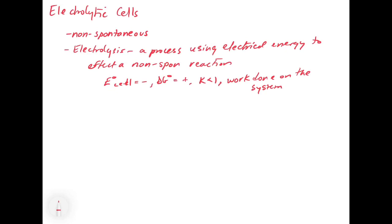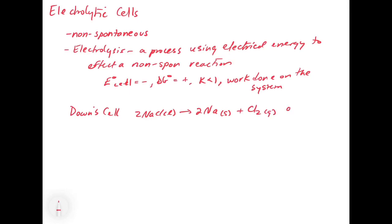The classic example of this is the production of things like sodium and chlorine gas from a molten salt of NaCl. The Down cell is where we take 2 NaCl(l) and we make 2 Na(s) plus Cl₂(g). This requires a high temperature — 801°C — to get it to melt, so the phase label is liquid. Then we stick our electrodes in and apply a potential.